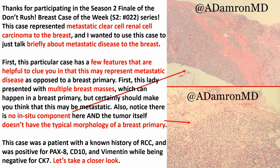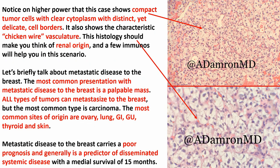Look into the patient's history — that's the most important thing. This case actually wasn't difficult for me because the patient had a history of RCC, and I knew that. So I was able to just do PAX8, CD10, and vimentin, which were all positive; and of course CK7 was negative. Those are the features you want to look for to help you. All tumor types can metastasize to the breast, so don't think that everything in the breast is breast — you can really have anything. The most common things that are going to metastasize to the breast are ovary, lung, GI, GU, thyroid, and skin. Metastatic disease to the breast carries a very poor prognosis and is generally a predictor of disseminated systemic disease — the median survival is only 15 months.